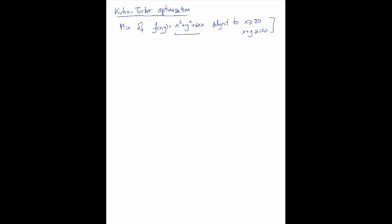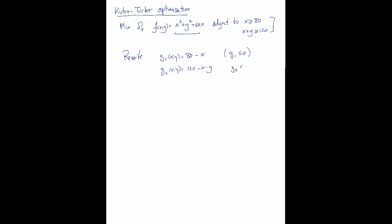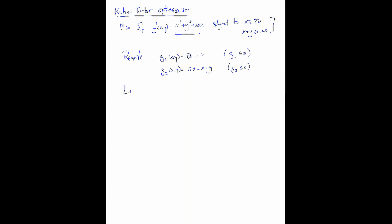First of all, we rewrite the conditions. We rewrite as g1 equals 80 minus x, and we have that g1 must be non-positive. g2 equals 120 minus x minus y, and g2 must also be non-positive. So now we go for the Lagrangian function. The Lagrangian function in our case is f of x, y, and lambdas — lambda 1, lambda 2.